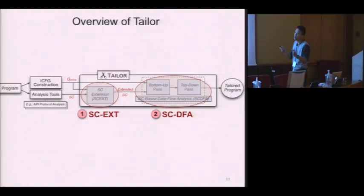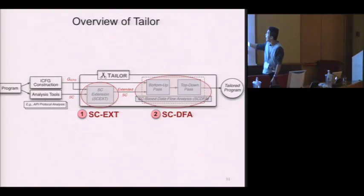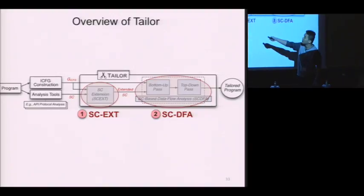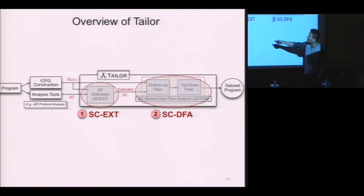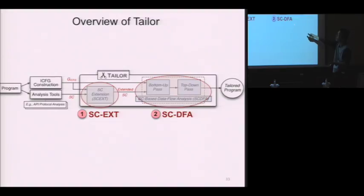Now let's see the overview of program tailoring. Our framework is called Tailor, which consists of two major parts. The first one is IC-based extension. The other one is IC-based data flow analysis to tailor the program. Given the program and a client such as API protocol analysis, the client outputs some raw sequential criteria. After IC extension, we extend this sequential criteria into an extended IC with longer length, and then feed it to the IC-based data flow analysis to tailor the program. Finally, we get the tailored program.